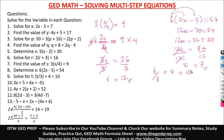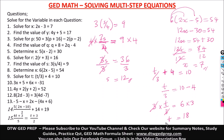Number 9: t over 3 plus 4 equals 10. First, take 4 to the other side — it becomes negative 4. So t over 3 equals 10 minus 4, which is 6. Now cancel out the denominator: since t and 3 are related by division, we do the opposite — multiply both sides by 3. This cancels the denominator, leaving t equals 6 times 3, which is 18.